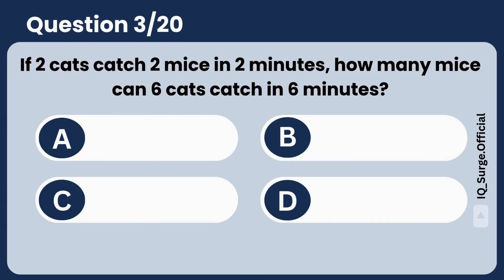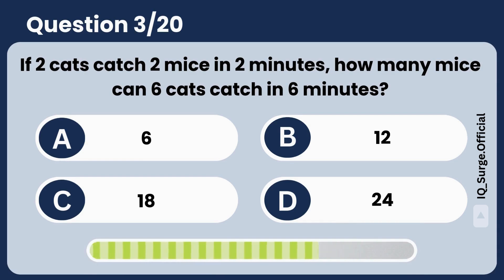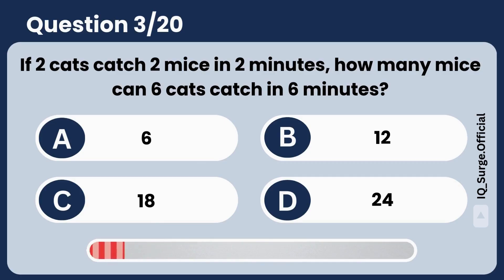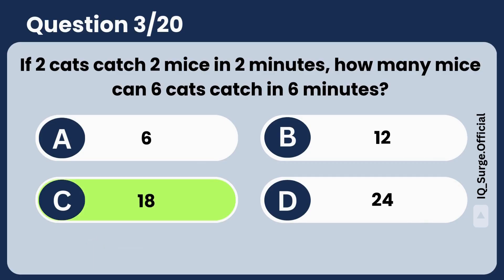If two cats catch two mice in two minutes, how many mice can six cats catch in six minutes? Answer: 18. Smart move.